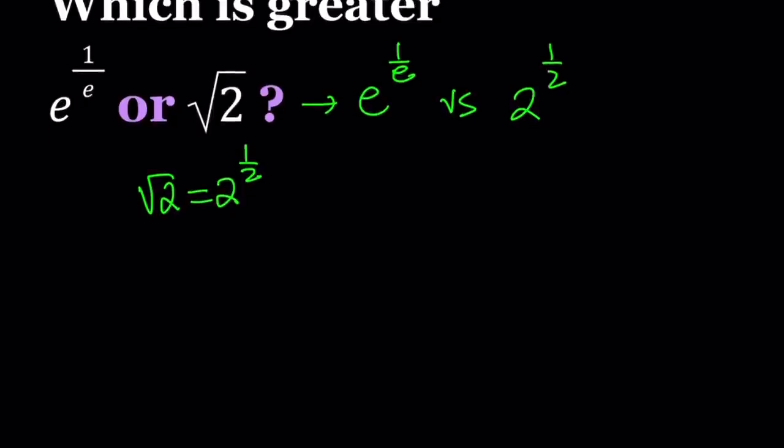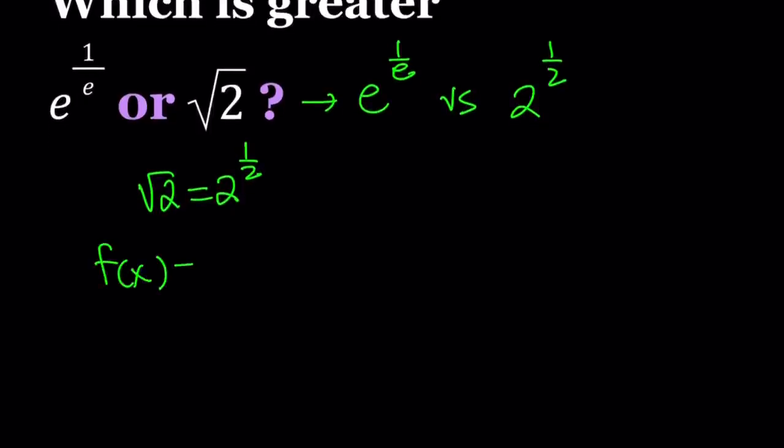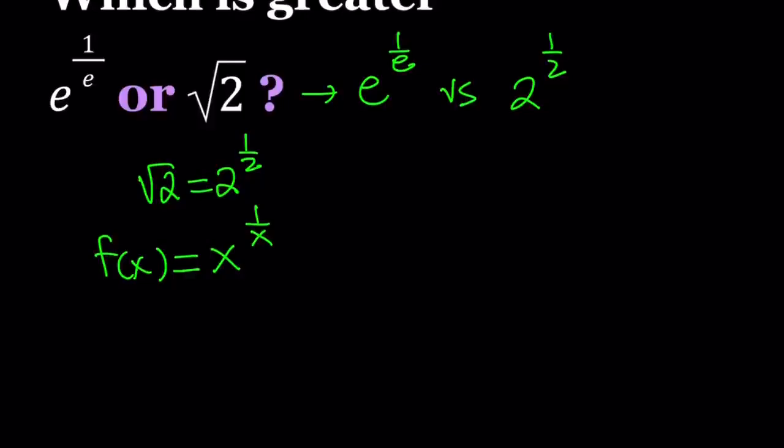Let's go ahead and define our function as f of x equals x to the power 1 over x. As you remember, we looked at x to the power x before and we use that a lot for comparing two numbers. But this time it's a little different and at the end I'm going to show you the graph of it.